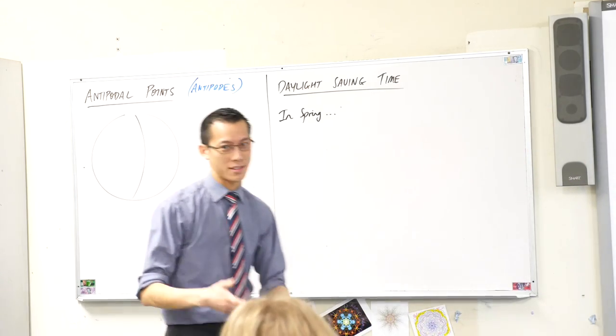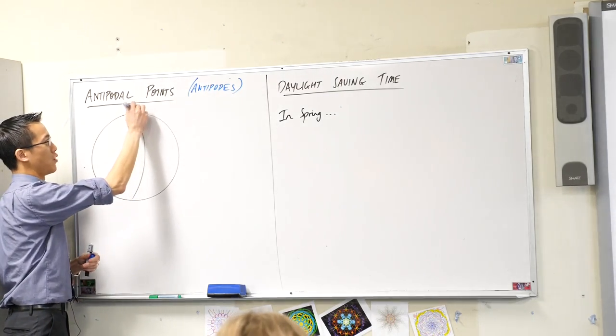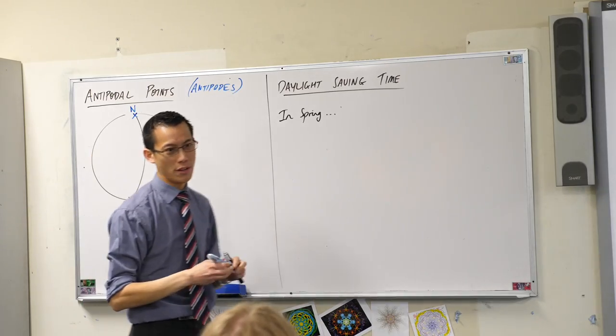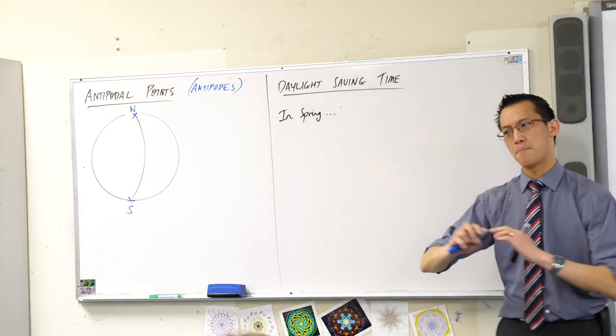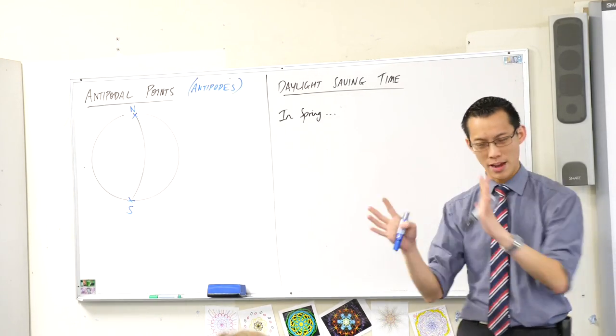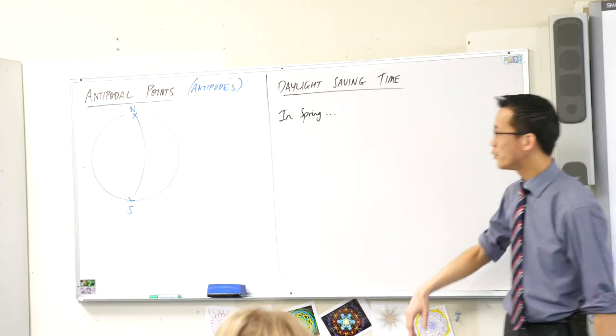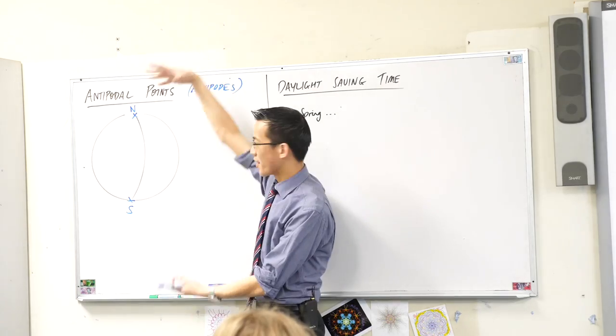So for example, you all know there's a famous pair of antipodal points, one on the top, the North Pole, and one on the bottom of the Earth, the South Pole. For the sake of simplicity, we won't worry about the fact that there's different poles, like magnetic poles and compass. We will consider one North Pole, one South Pole, they are directly facing away from each other.